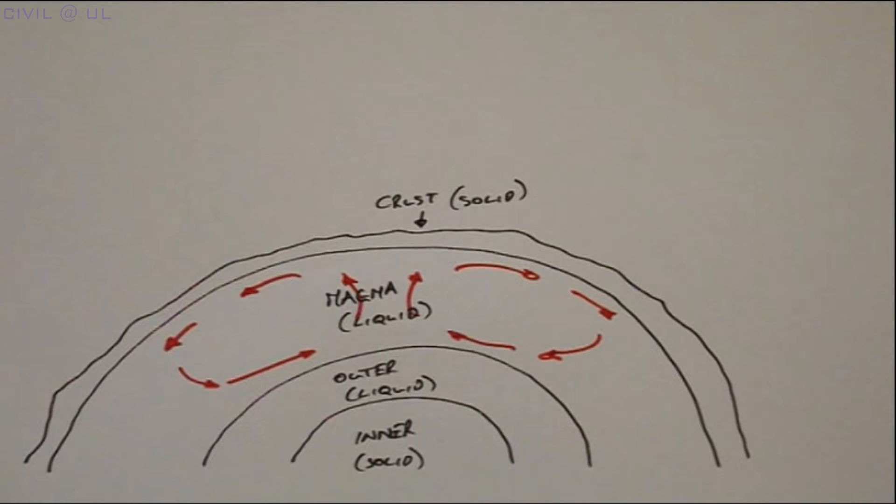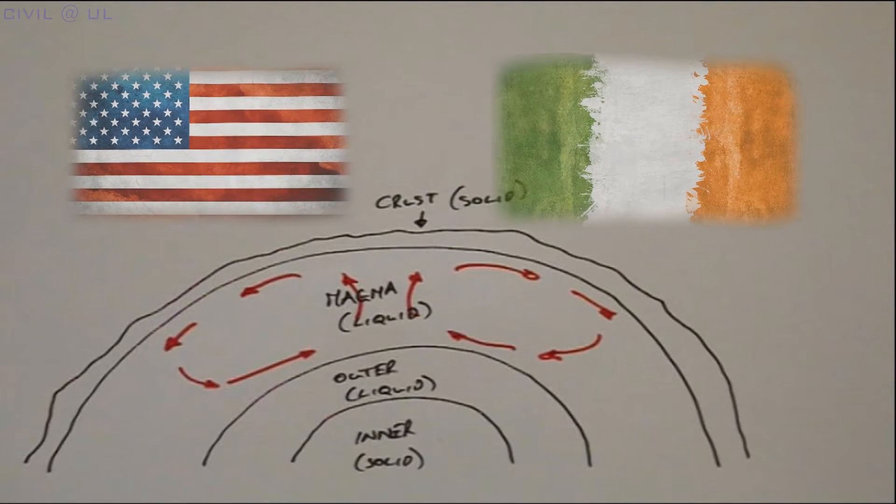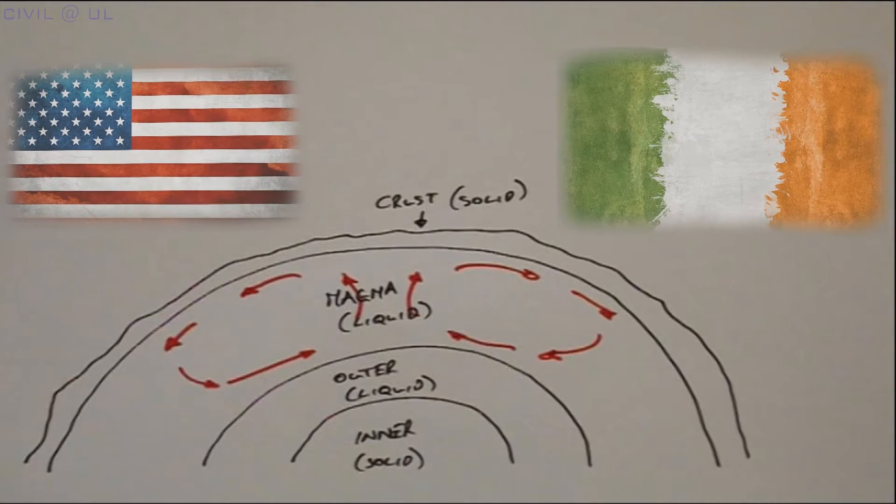Evidence of this has been found by geologists monitoring the crust movement. For example, it has been found that Ireland is moving at a rate of 4 cm further away from New York every year.